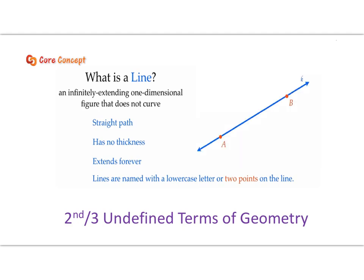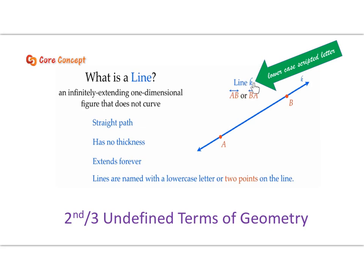Here we have two points on the same line — point A, point B — and a lowercase scripted K, which also names this line. We can name any line with a lowercase scripted letter, or write the word 'line' with that letter. You can also name any two points on the line using capital letters, but make sure you include the line symbol with arrows above those two letters — without that symbol you're naming something completely different. You can rearrange the letters; only two letters are used, because three letters name something else.